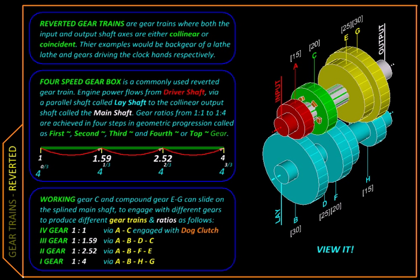Here we are going to look at a commonly used type of gear train called the reverted gear train, where the input and output shafts are co-linear or even coincident.